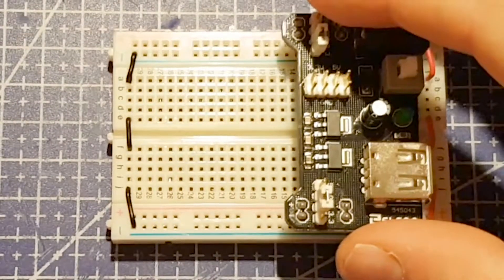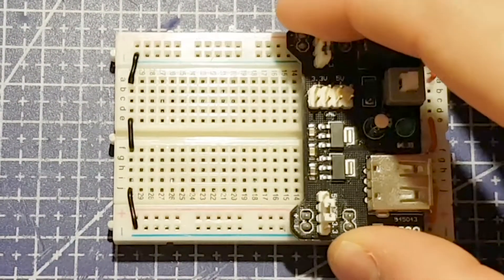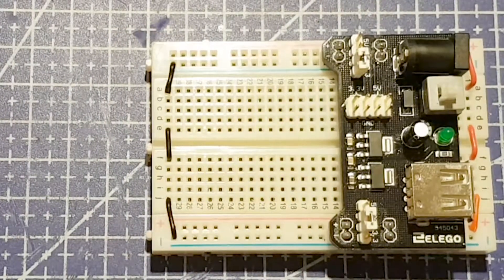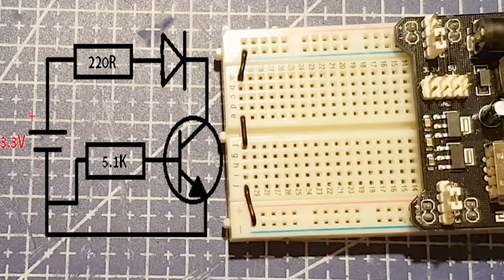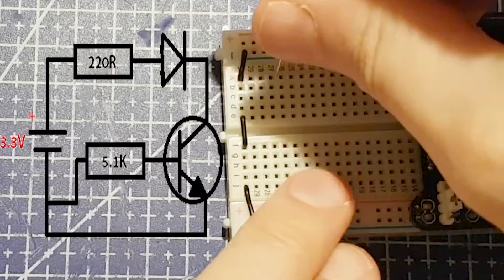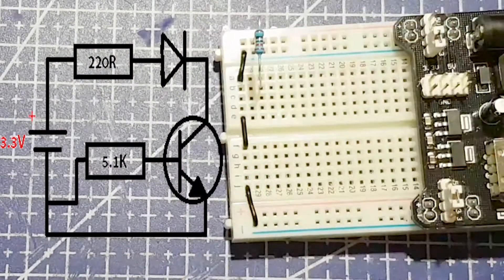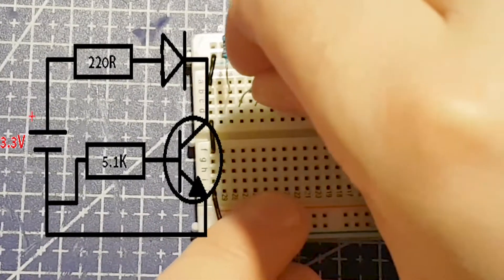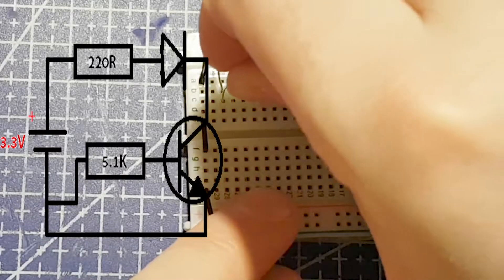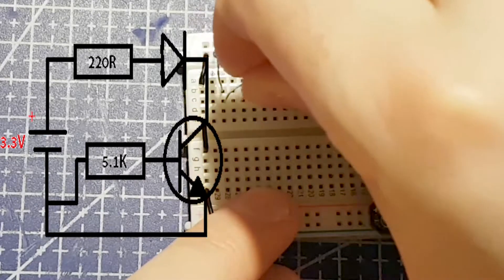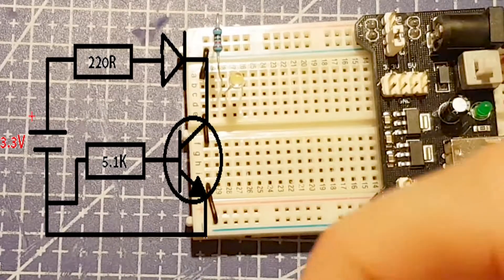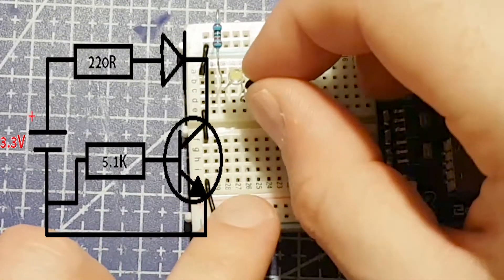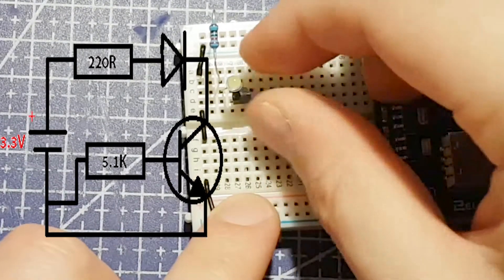I'm going to put my power supply into the breadboard. I'm going to run 3.3 volts. So I'm going to take my current limiting resistor and I'm going to go from the positive of the breadboard into the anode of an LED, which is the longer leg. It's going to come out of the anode into the cathode of the LED. And that will be going to the collector of the transistor, which is the second pin on this particular type.